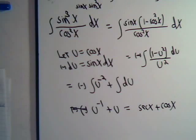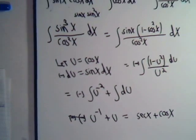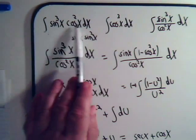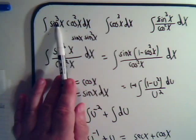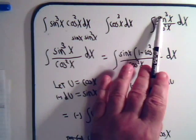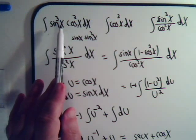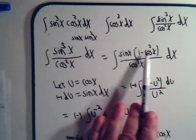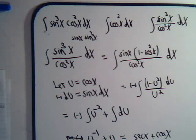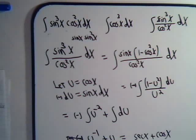So whether you have sine and cosine functions multiplied together, or whether you have a rational function where they're divided, if you see an odd power, try writing it out with this strategy. A lot of times that will set you up for a convenient u-substitution. There are some other tricks we can use when we have trig functions raised to different powers, and we'll tackle those in some more videos.